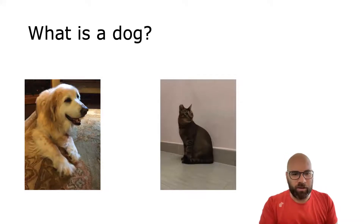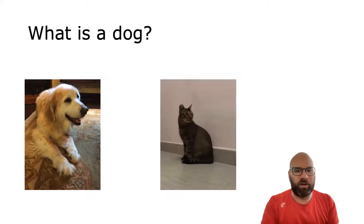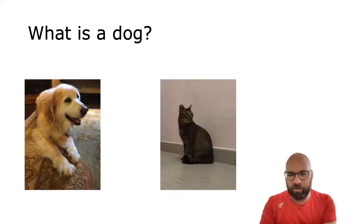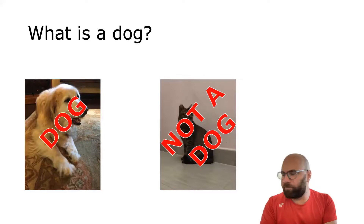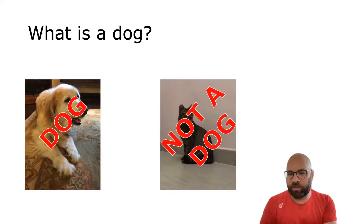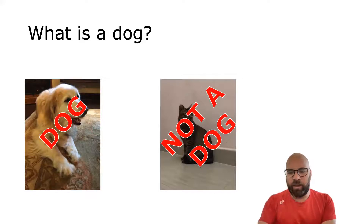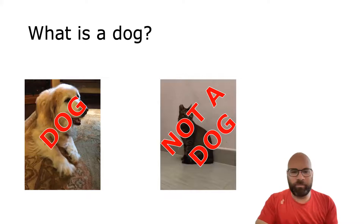So you can look at this good girl on the photo on the left hand side and say yes, that's a dog. Or you can look at this guy on the right and say no, that's not a dog. And that's what it is to know what the word dog means — it means you can do that for anything. If you can't do that, you don't know what the word dog really means.